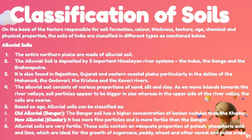Alluvial soils are very fertile. These soils contain an adequate proportion of potash, phosphoric acid, and lime, which are ideal for the growth of sugarcane, paddy, wheat, and other cereals and pulses.